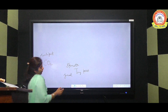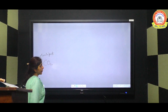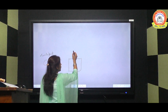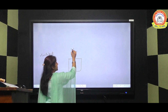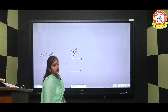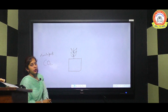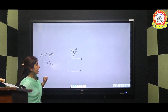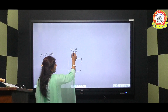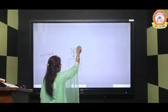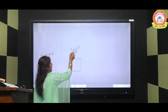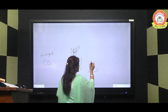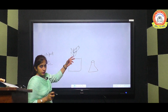Now we will perform an activity to show that if carbon dioxide is not present, the plant will not do photosynthesis. Again, we will take a potted plant and destarch it as we did in the previous activity — removing all the starch. Then we will keep one leaf enclosed in a conical flask — but the leaf should still be attached to the plant.